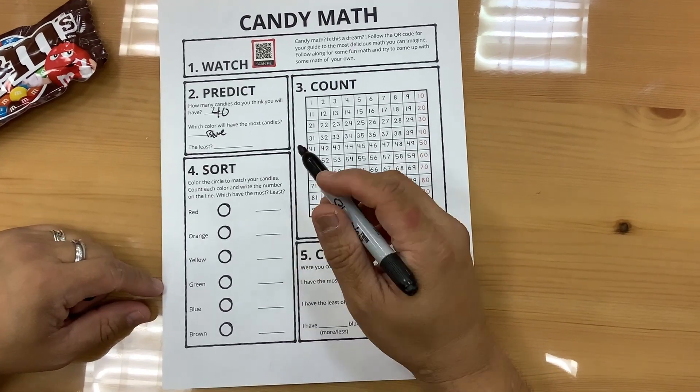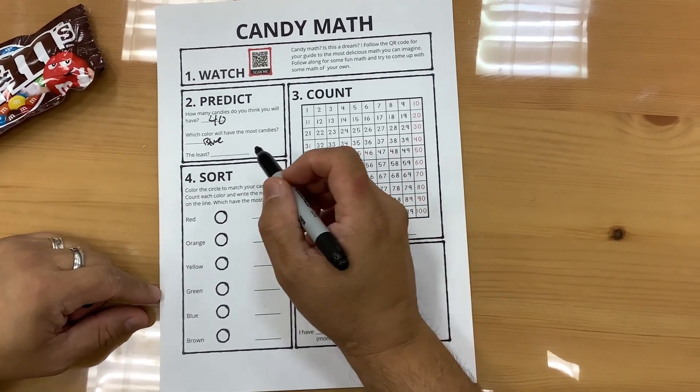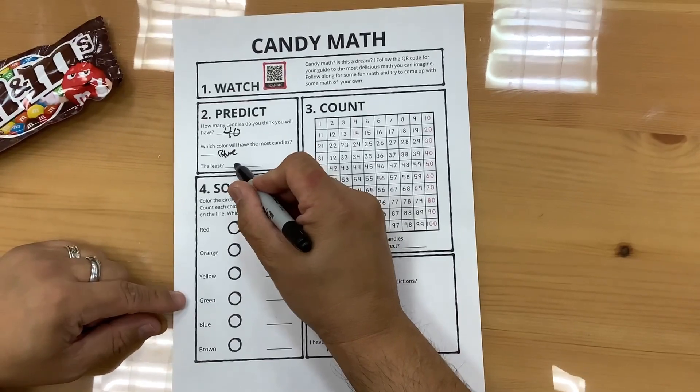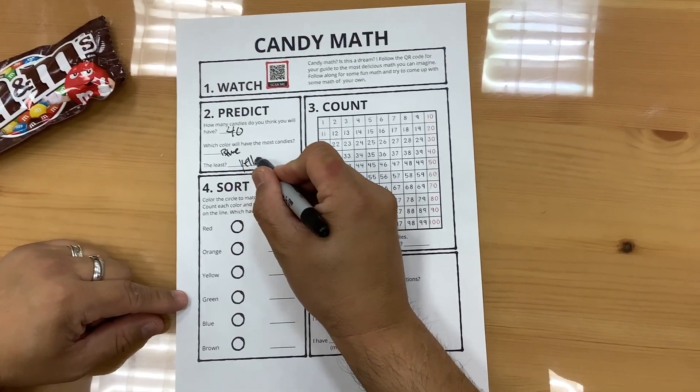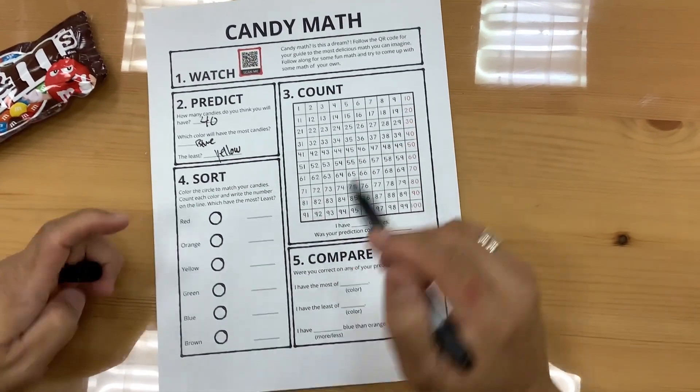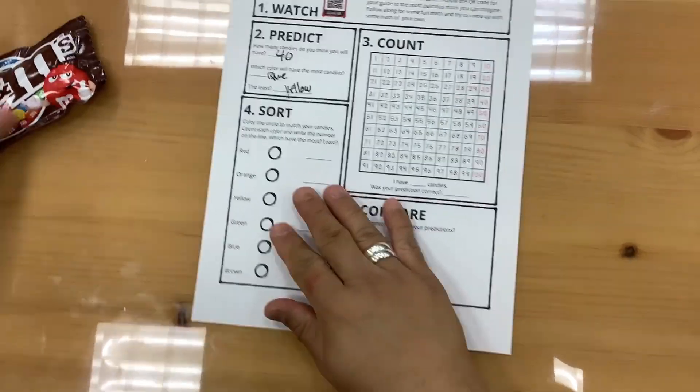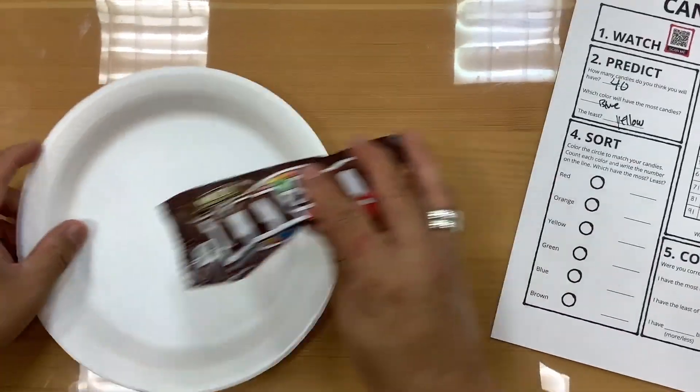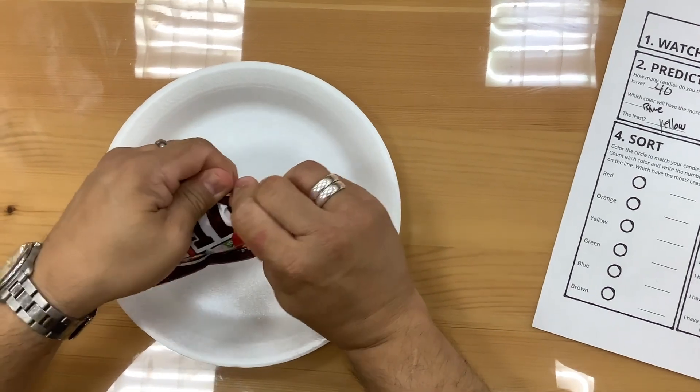The least, I'll probably do yellow. Okay, so I'm going to open my candy and I'm going to start counting.